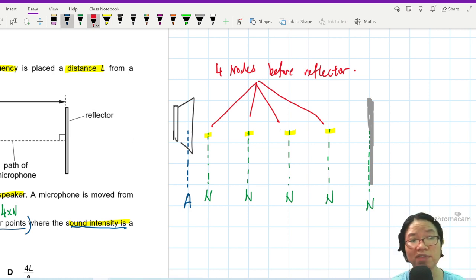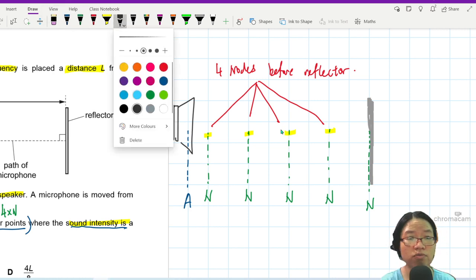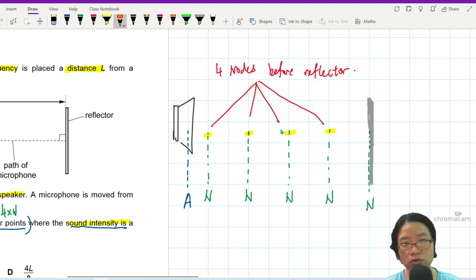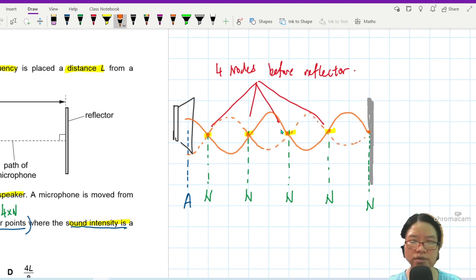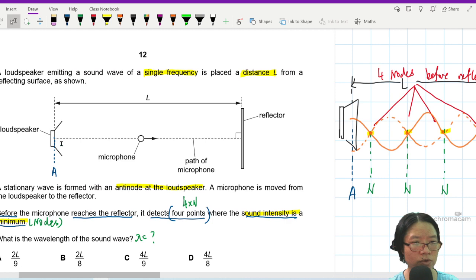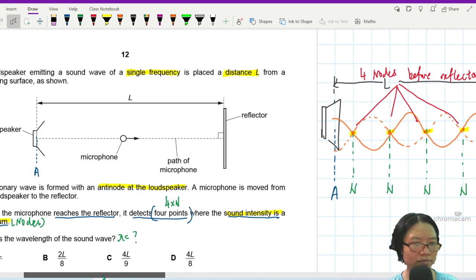So the vibration of the air particles will not be that high anyway. So one, two, three, four. This one is before reaching four nodes before reflector. So if you want to calculate the number of lambda, I can sketch the wave profile for you now. Let's say I use orange and this is an anti-node. So these are nodes. The nodes are here.